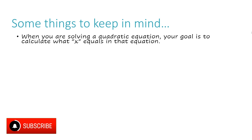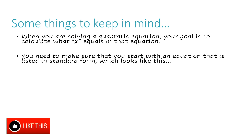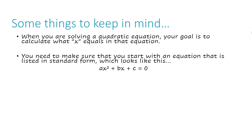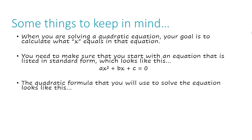Some things to keep in mind: when you are solving a quadratic equation, your goal is to calculate what x equals in that equation. You need to make sure that you start with an equation that is listed in standard form, which looks like this: ax squared plus bx plus c equals zero. The quadratic formula that you will use to solve the equation looks like this: x equals negative b plus or minus the square root of b squared minus 4ac, all over 2a.